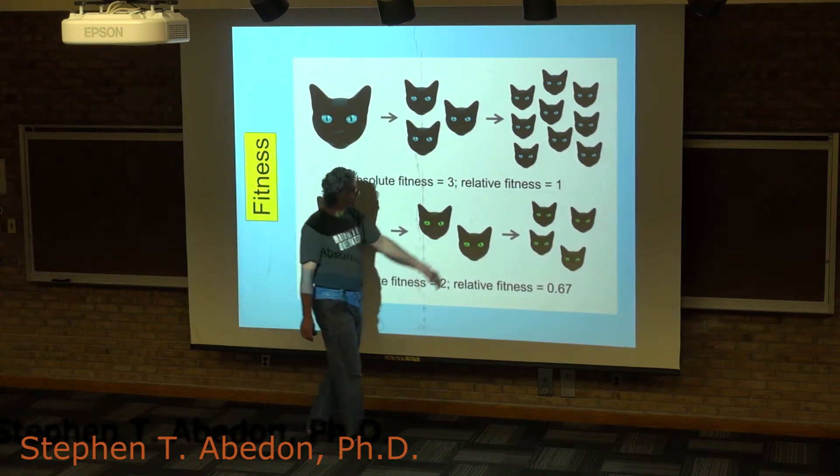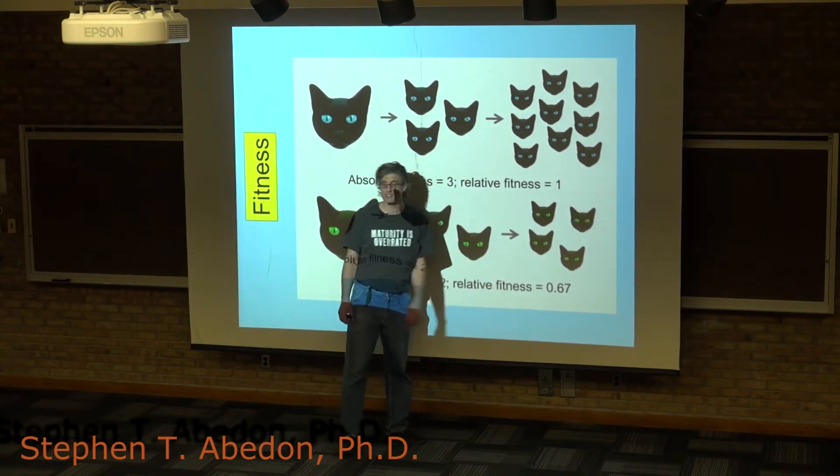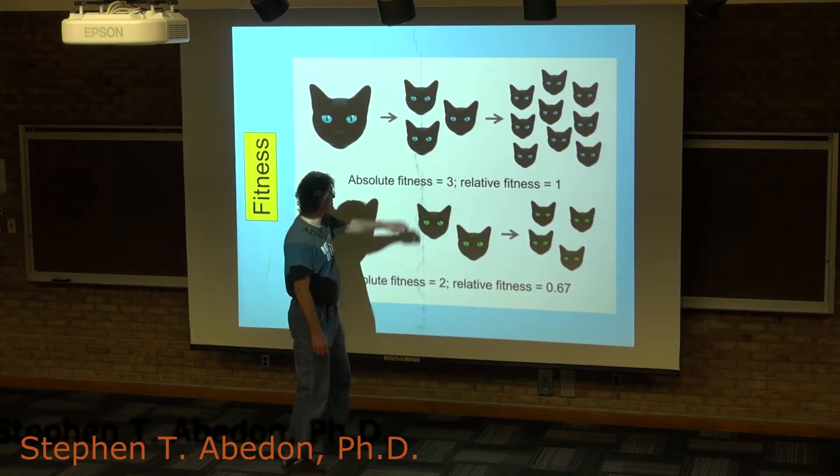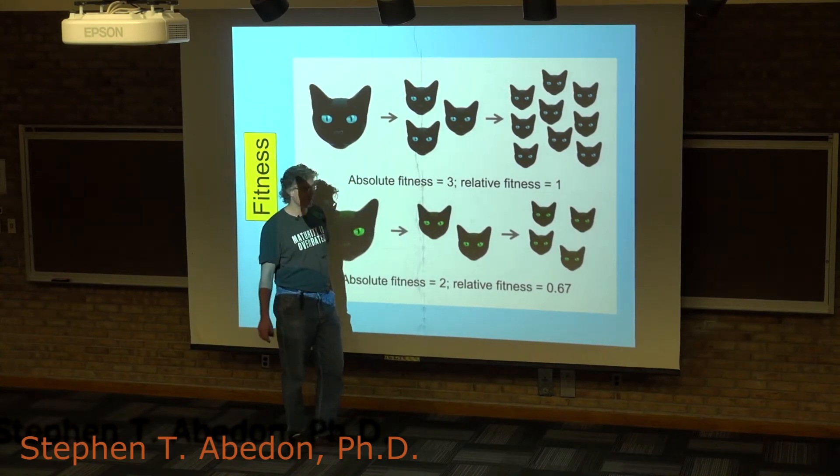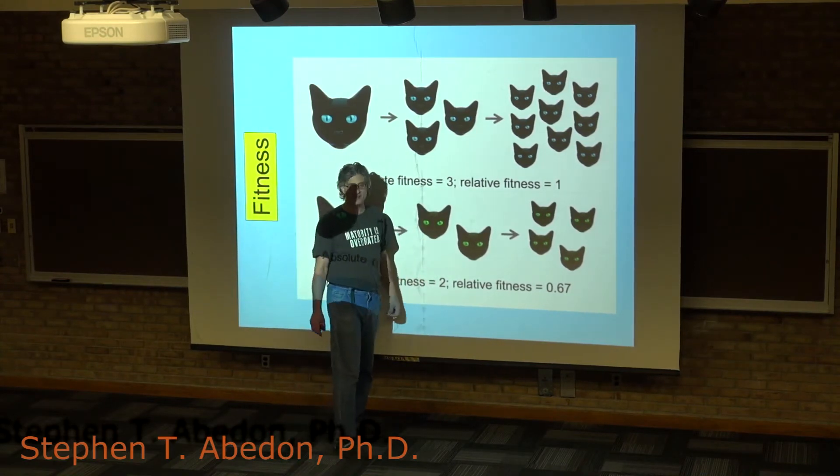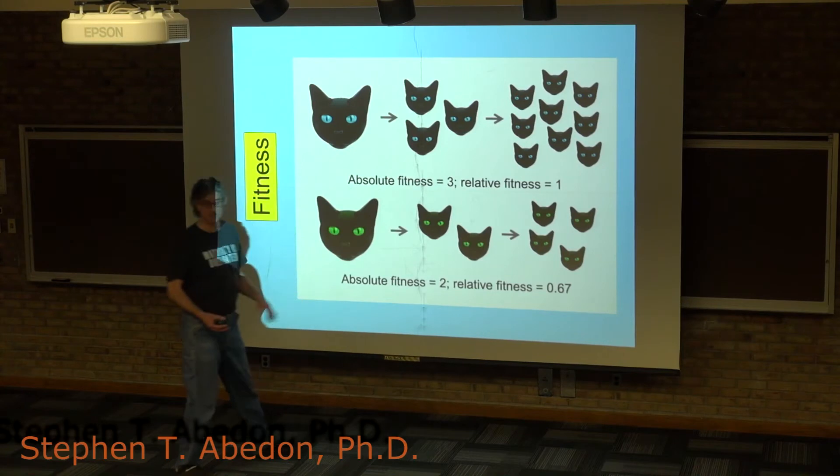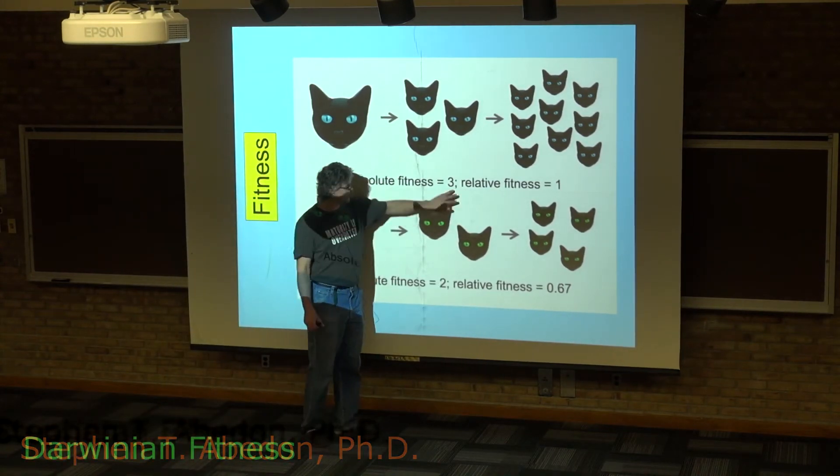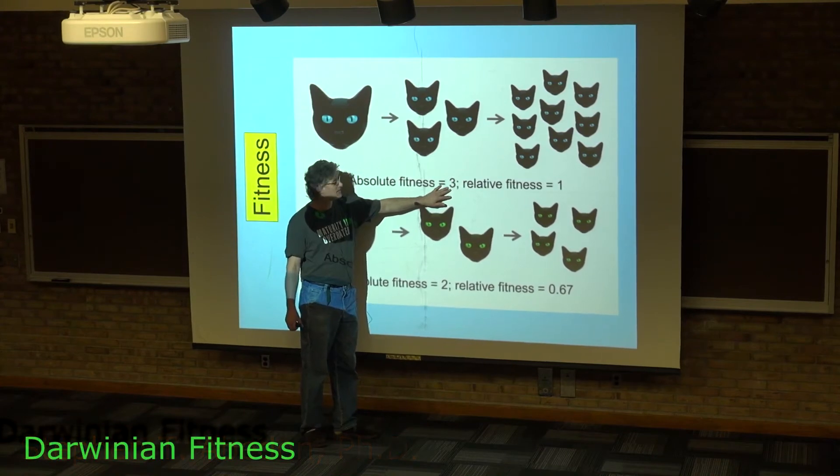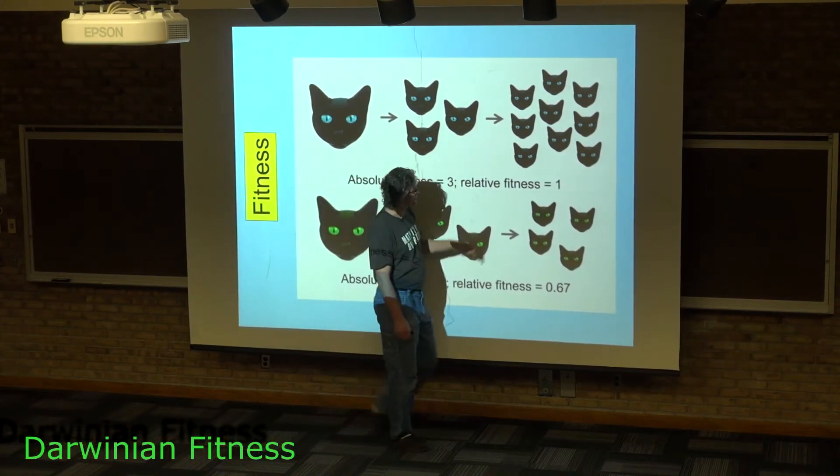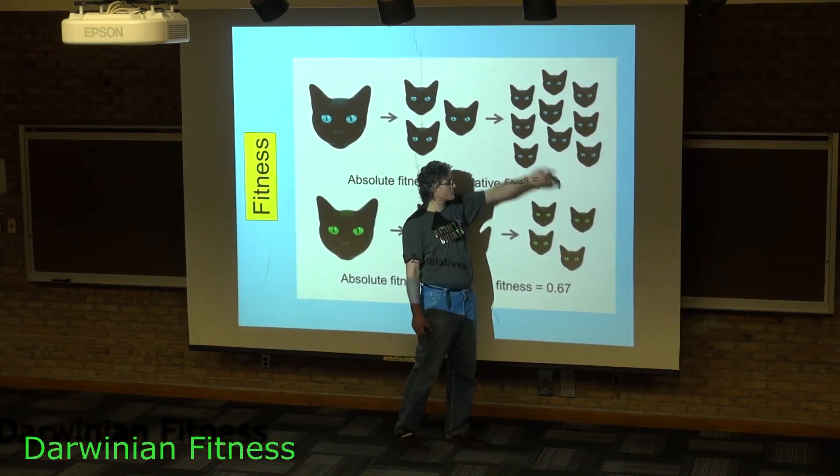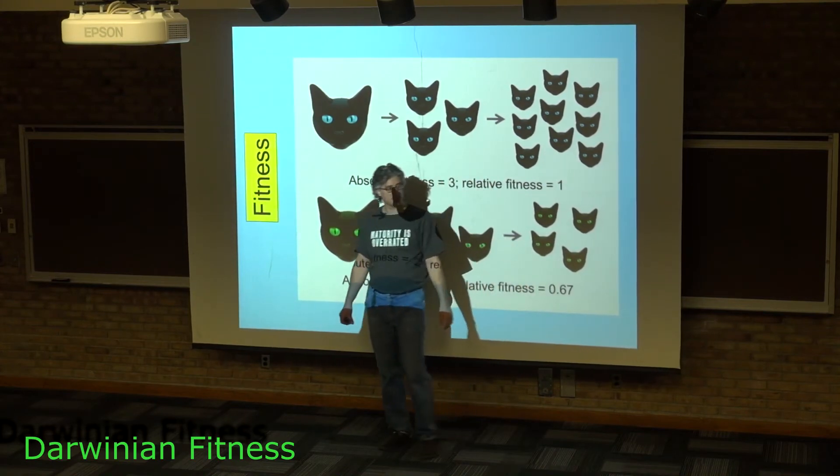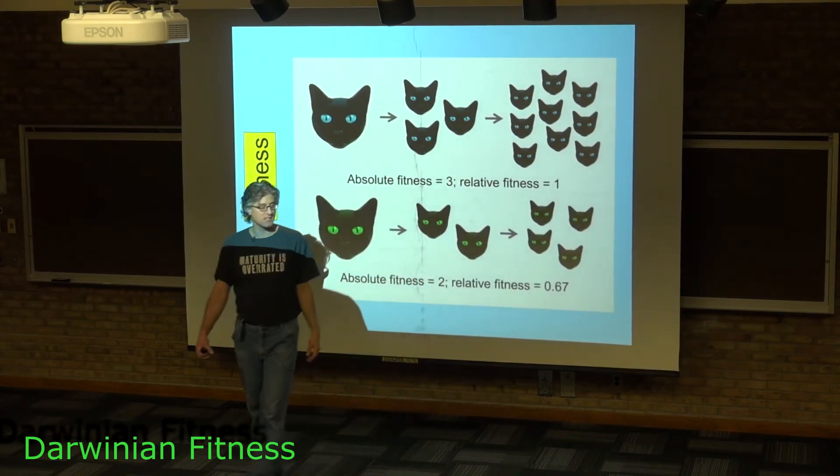We also have a term called relative fitness, which is simply taking one of these fitnesses, setting it to one, and adjusting the other one so that it's whatever the relative size is compared to that one. So two is two-thirds the size of three, and therefore if we set the relative fitness of this group to one, we would say the relative fitness of this group is 0.67 or two-thirds.